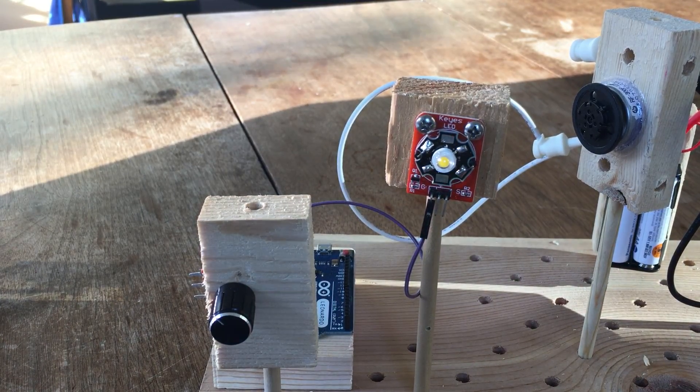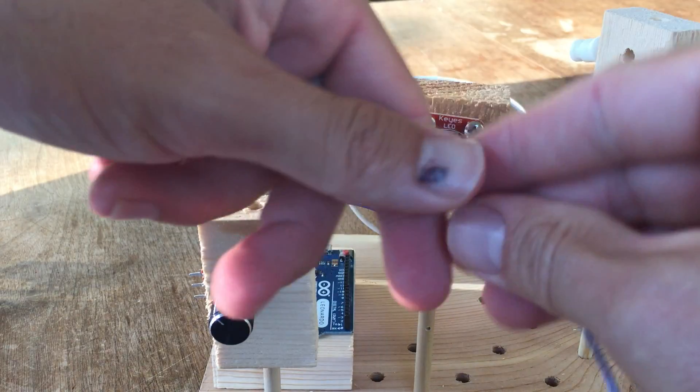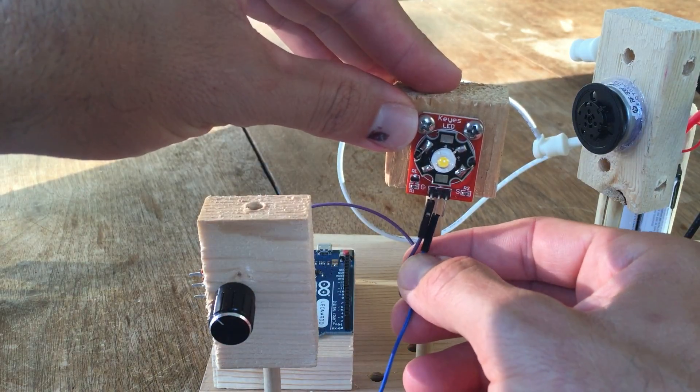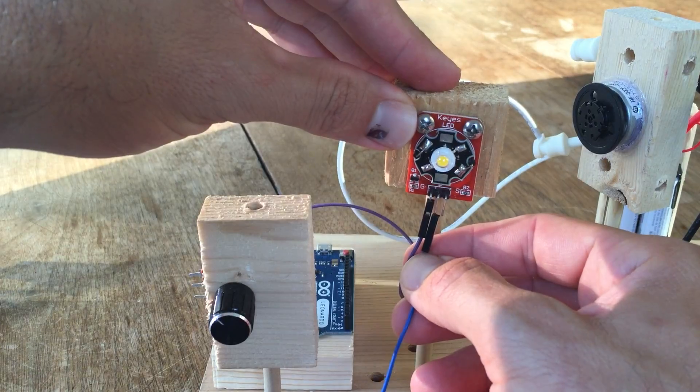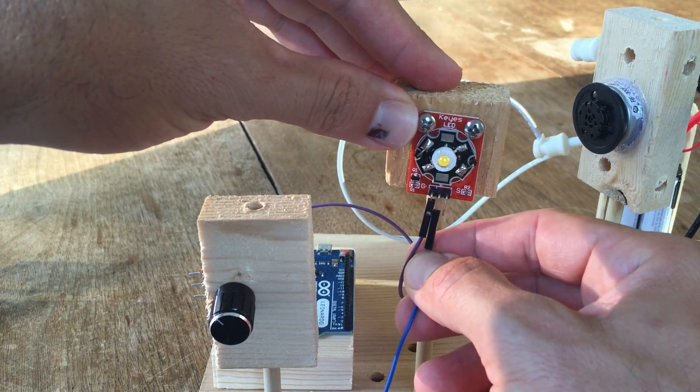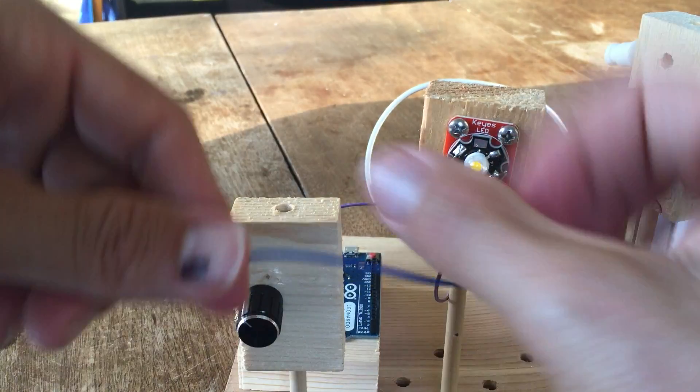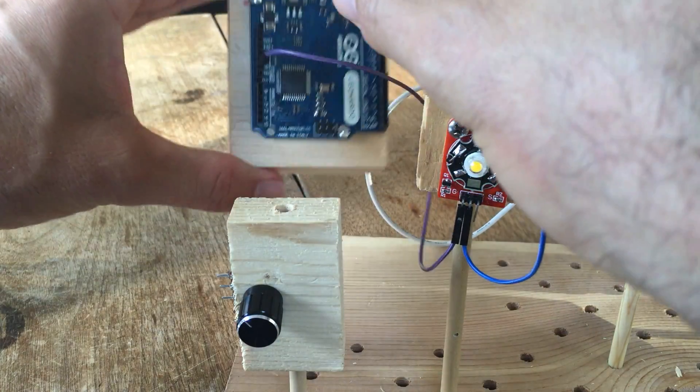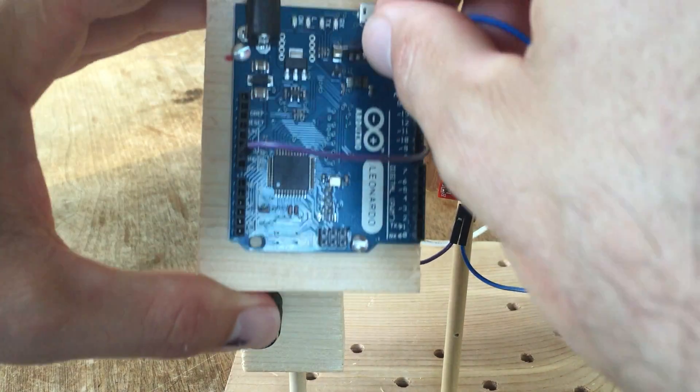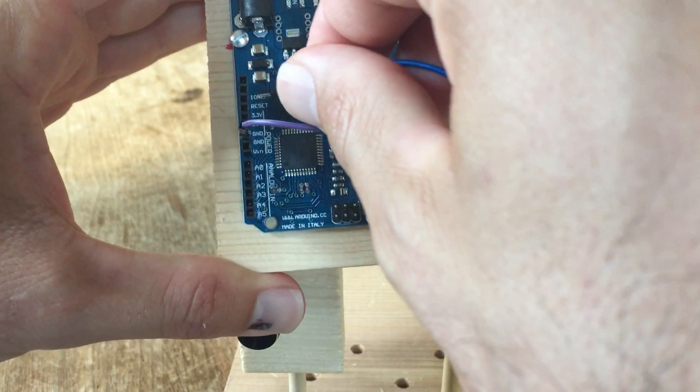Next, we're going to connect power by using the jumper wire to go from the center pin on your 3-watt bulb back to 5V on your Arduino, just above your GND.